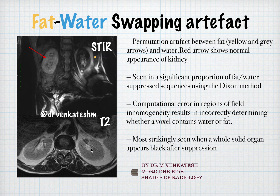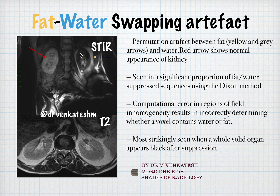So what is the field inhomogeneity in our case? There was a metallic implant — an MR-compatible metallic implant. You can see a lot of distortion, and this created field inhomogeneity. This is a fat-suppressed sequence, and this is the artifact which we got. In place of fat, the fat doesn't suppress here, and in place of water, the water becomes suppressed. Most strikingly, the whole solid organ appears black after suppression.